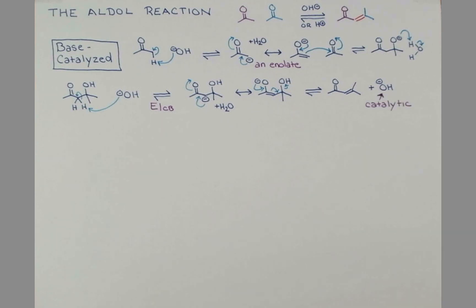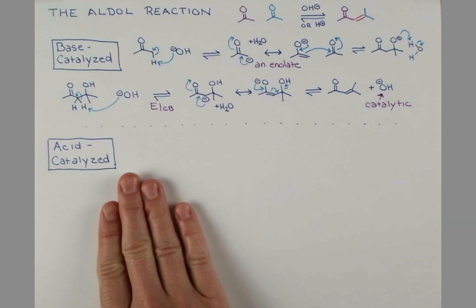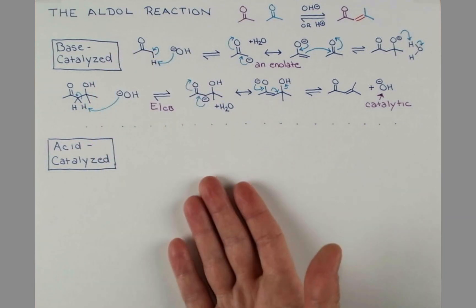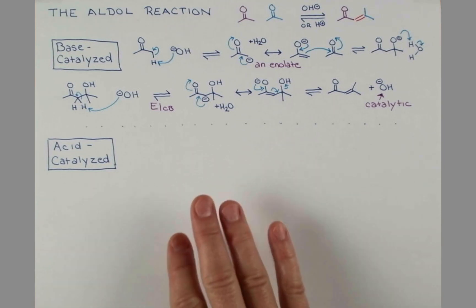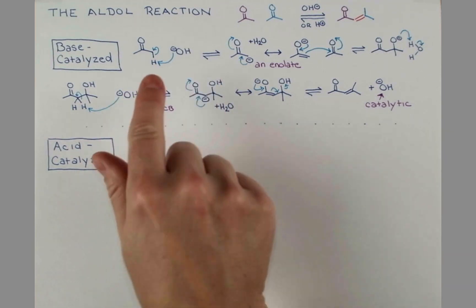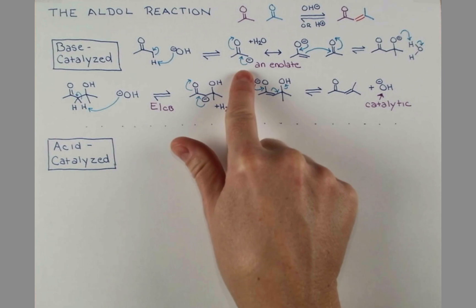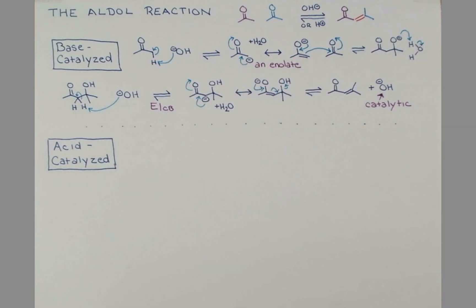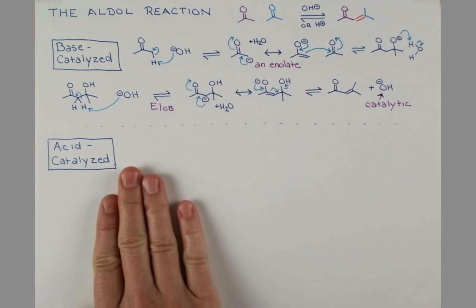I mentioned earlier that we could do this reaction under acid-catalyzed conditions as well. Let's take a look at that mechanism. Now, the big difference that we're going to see in the base-catalyzed versus the acid-catalyzed mechanism is the types of intermediates that can form. Under basic conditions, we typically have negative charges and neutral compounds interacting. But under acid-catalyzed conditions, something negatively charged like this really can't exist with protons floating around in solution.